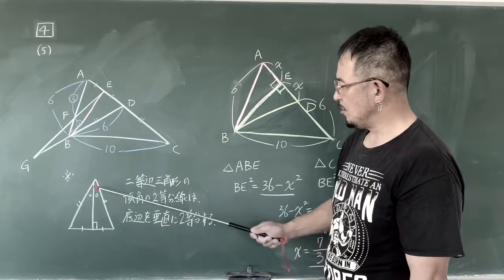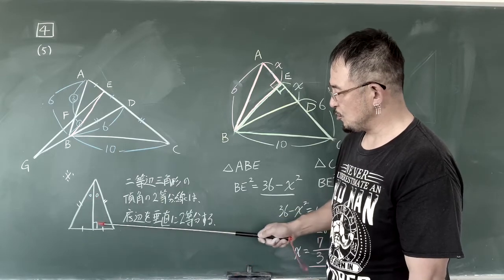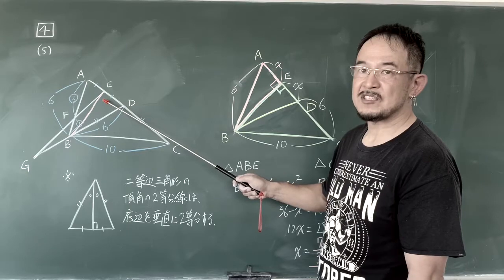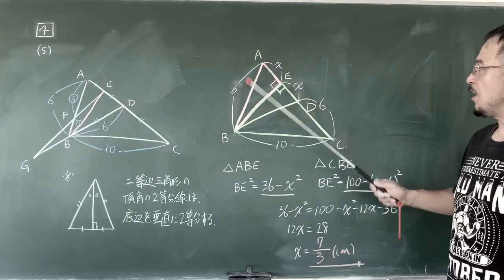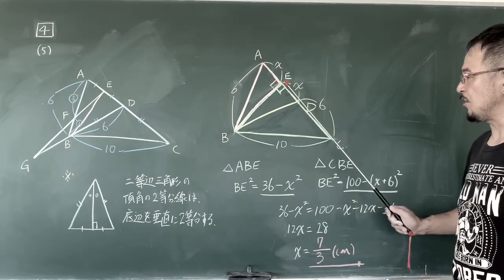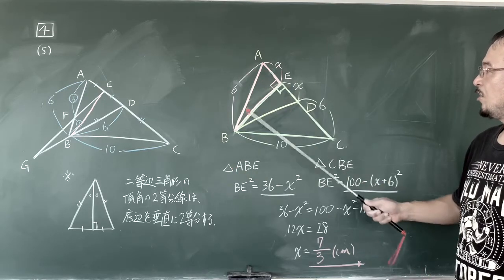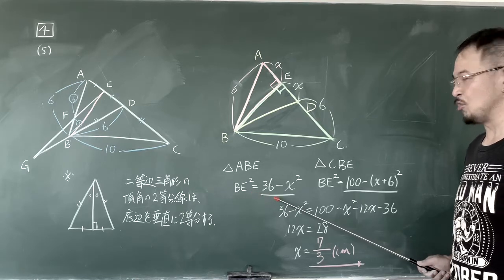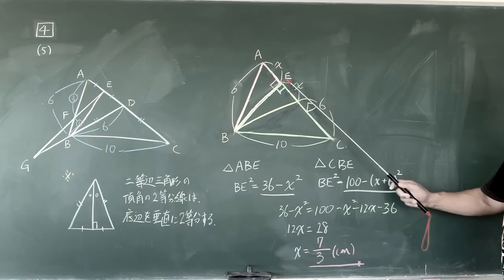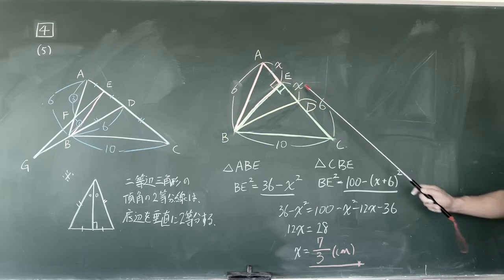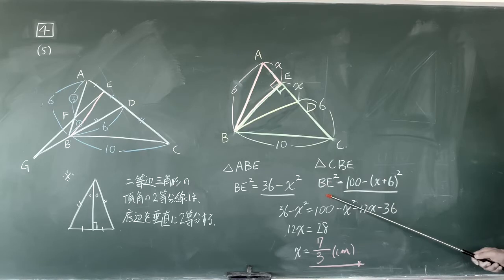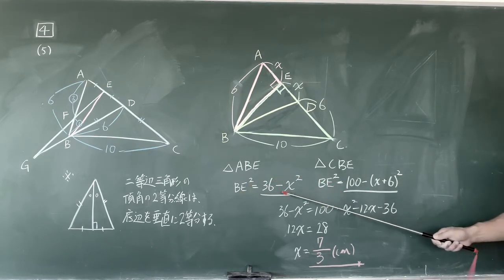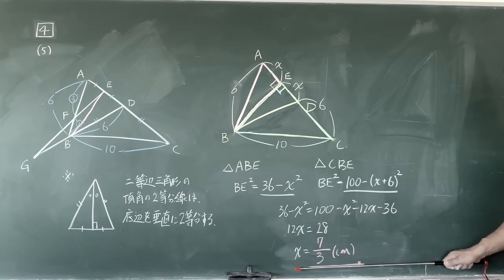4-5です。まず、BとEをつなぐ補助線を書くところから始まるんですけども、三角形ABDは6cm6cmで、これ二等辺三角形なんですね。二等辺三角形の頂角の二等分線は、底辺を垂直に二等分する。こことここをつなぐと、底辺が二等分されていますから、ここが90度になると。これが一番大切なポイントです。三角形ABEは直角三角形、三角形BCEも直角三角形ということで、BEの二乗プラスxの二乗は6の二乗。BEの二乗は36-x²。同様に三角形BCEは、BEの二乗プラス(xプラス6)の二乗イコール10の二乗。BEの二乗イコールと置き換えると、100-(xプラス6)の二乗。どちらもBEの二乗イコールですので、これイコールこれを解くと、xは3分の7センチとなります。